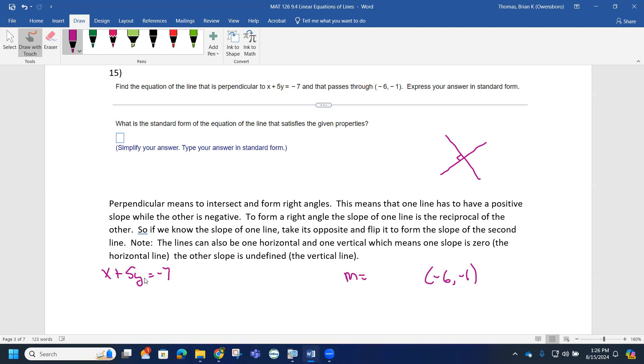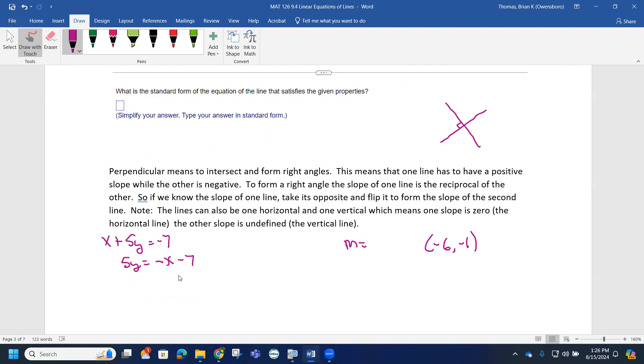We're going to use this equation to find the slope of this line. So if I solve for y, I can move this x over to the other side by just flipping it to the other side makes it negative. If I divide both sides by 5, this turns into y, this turns into negative x over 5, minus 7 over 5. So that's going to be negative 1 fifth x minus 7 fifths.